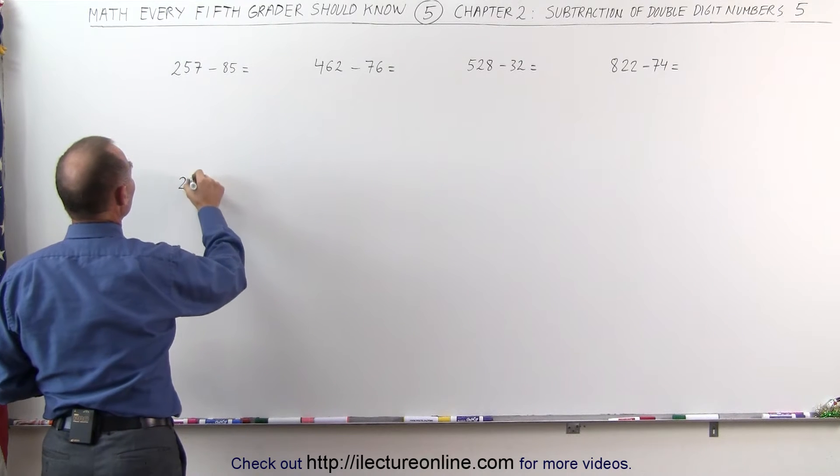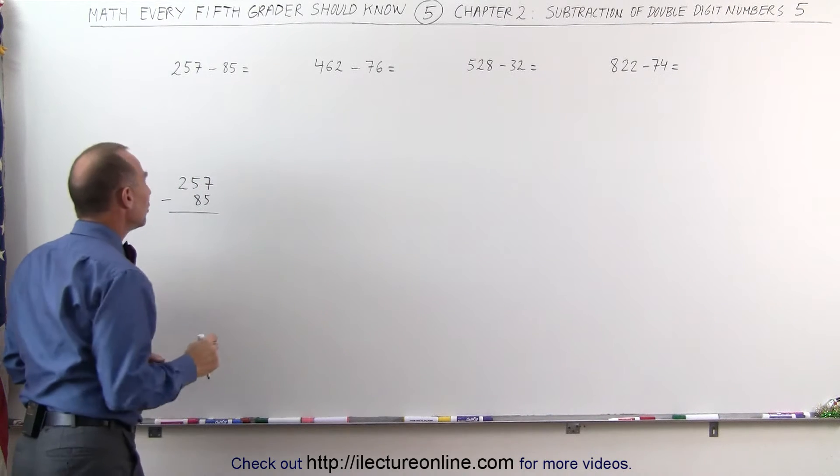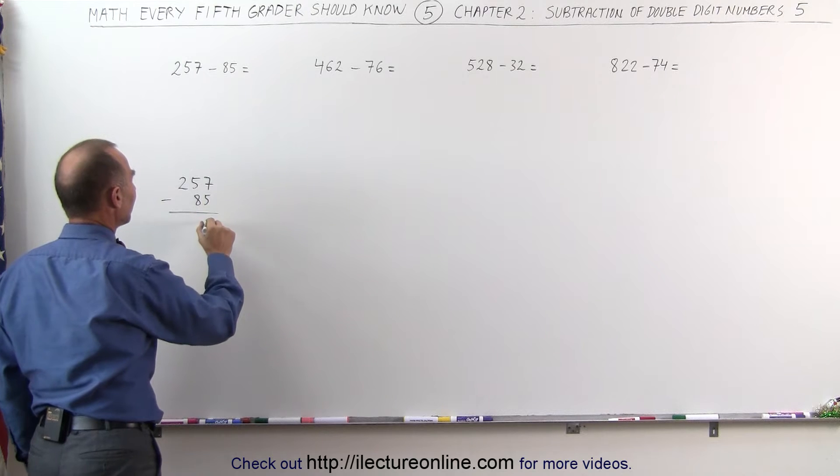We would take the number 257 and subtract 85 from that. The way you do that is you go to the last numbers, we take 7 minus 5 that gives me 2.